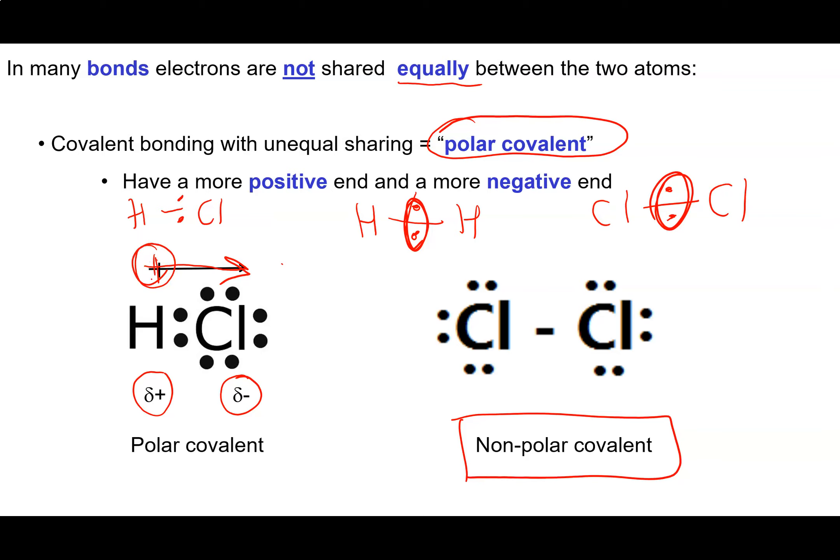Or we can also indicate it with what we call a polar arrow where we draw an arrow pointing to the more negative end of the bond and then just to emphasize the point, we make the other end of the arrow into a plus sign. So when we have an unequal sharing of electrons, we have what we refer to as a polar covalent bond.